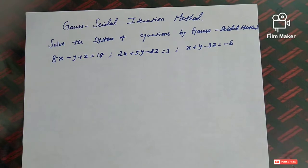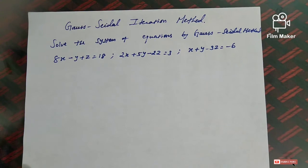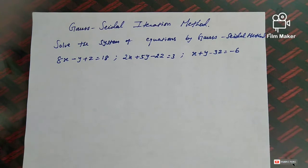Welcome to the lecture series on numerical methods. Today we are going to discuss iterative methods. Iteration methods are actually indirect methods. In the previous lectures we discussed Gauss elimination and Gauss-Jordan — those kinds of methods are called direct methods. The iteration method can also be called an indirect method.